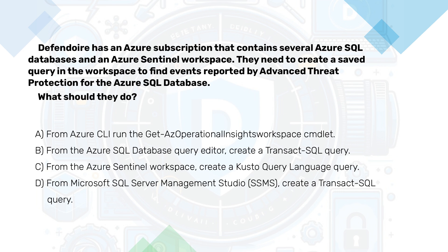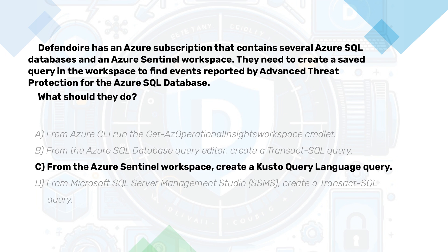Now pause the video here, have a bit of think and then continue when you are ready. To create a saved query in the Azure Sentinel workspace to find events reported by advanced threat protection for an Azure SQL database, the best approach is to create a Kusto query language query. Kusto query language is specifically designed for Sentinel and can directly handle queries. This makes it ideal for creating event sourcing queries that trigger alerts or feed into the functions required by Sentinel.